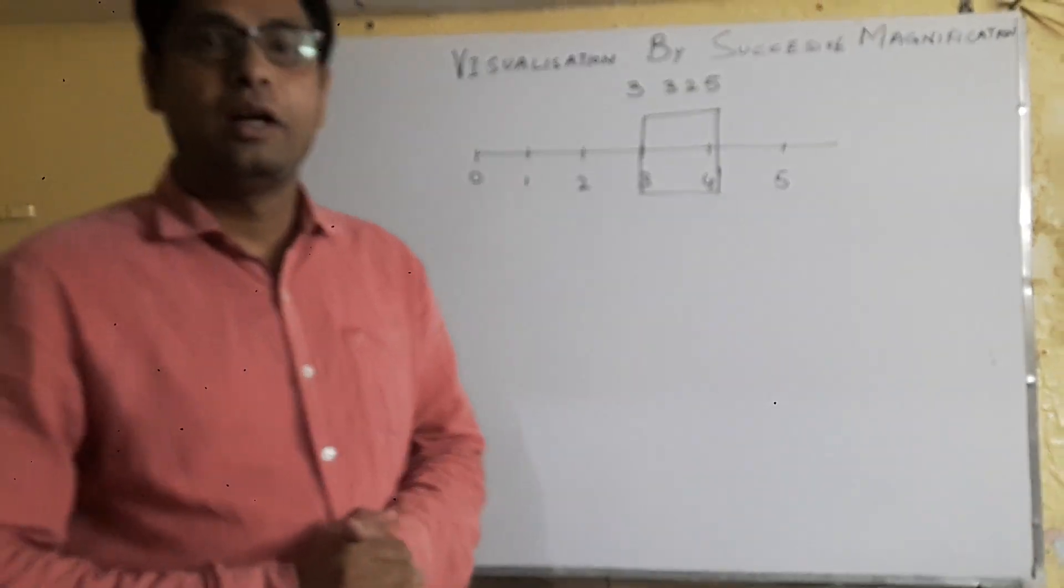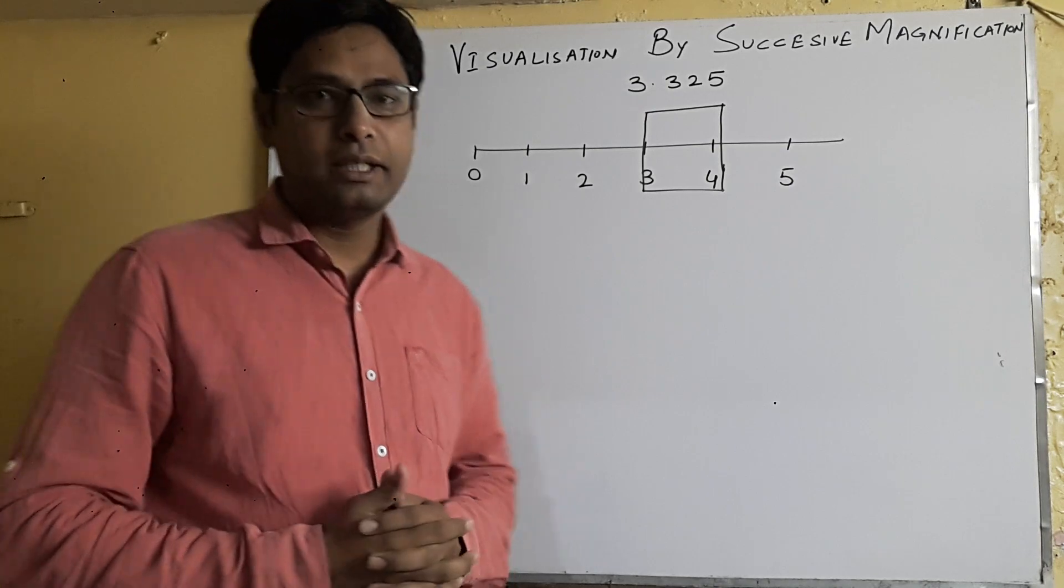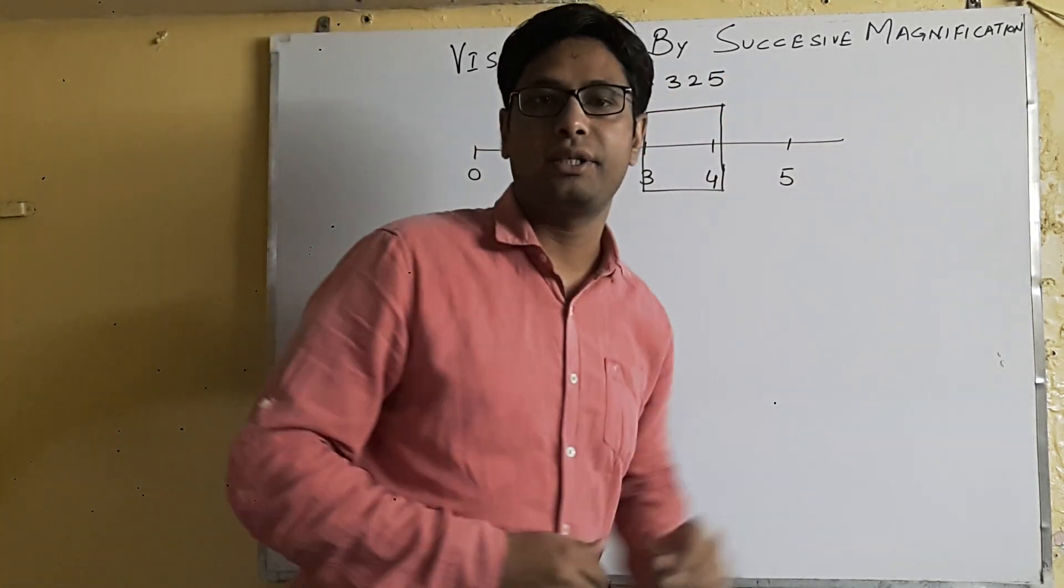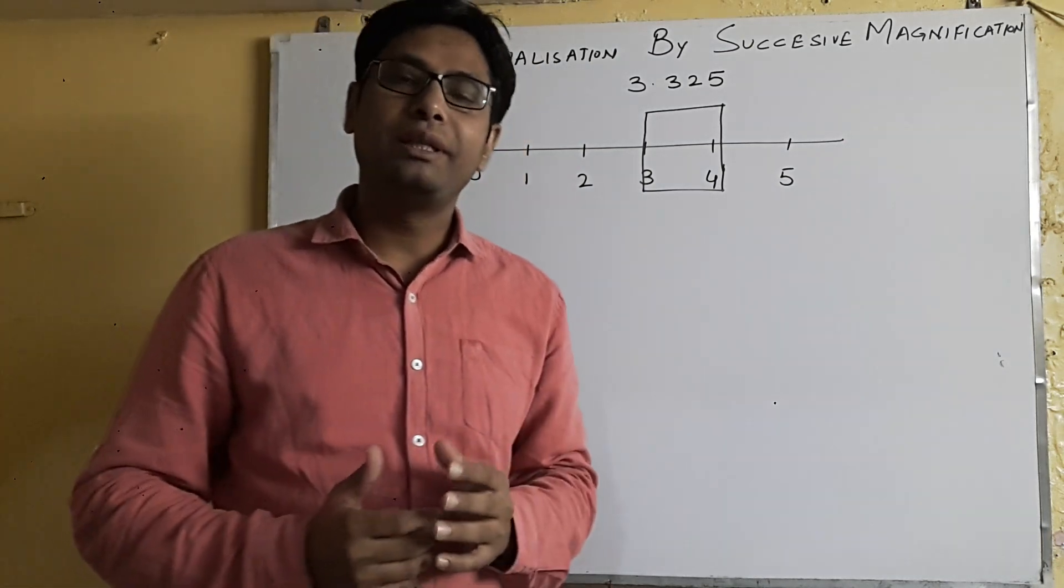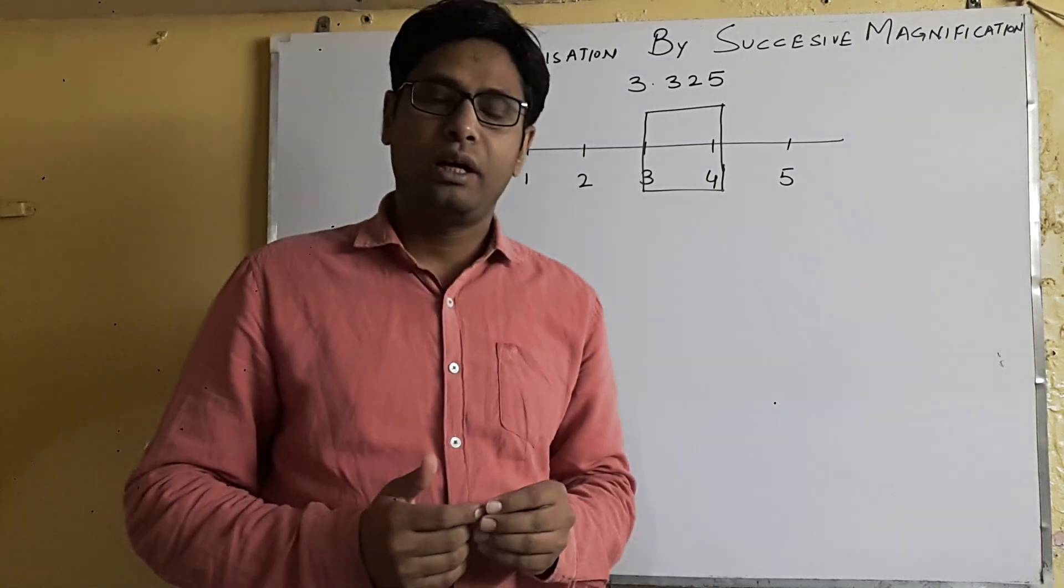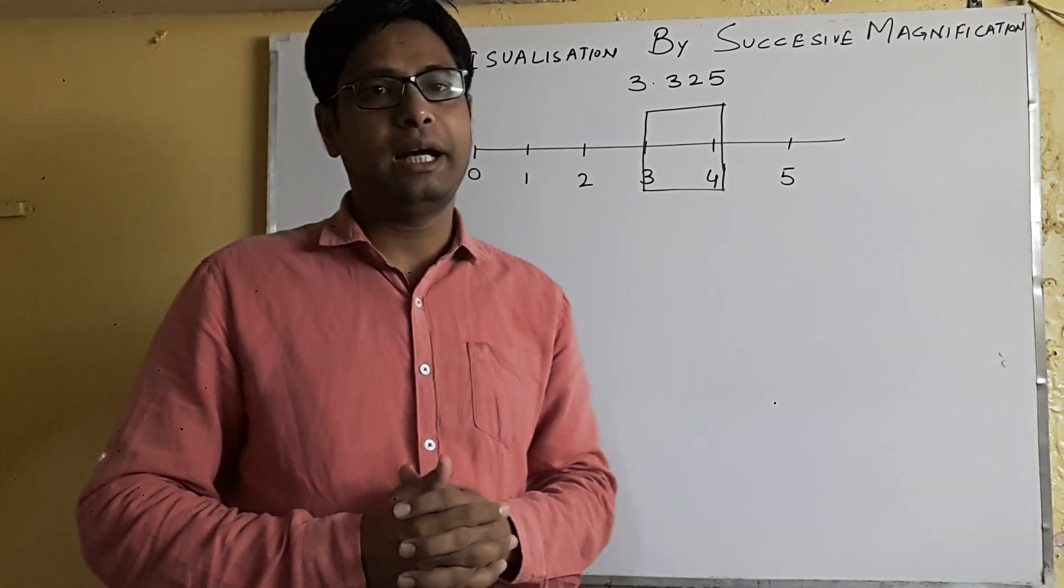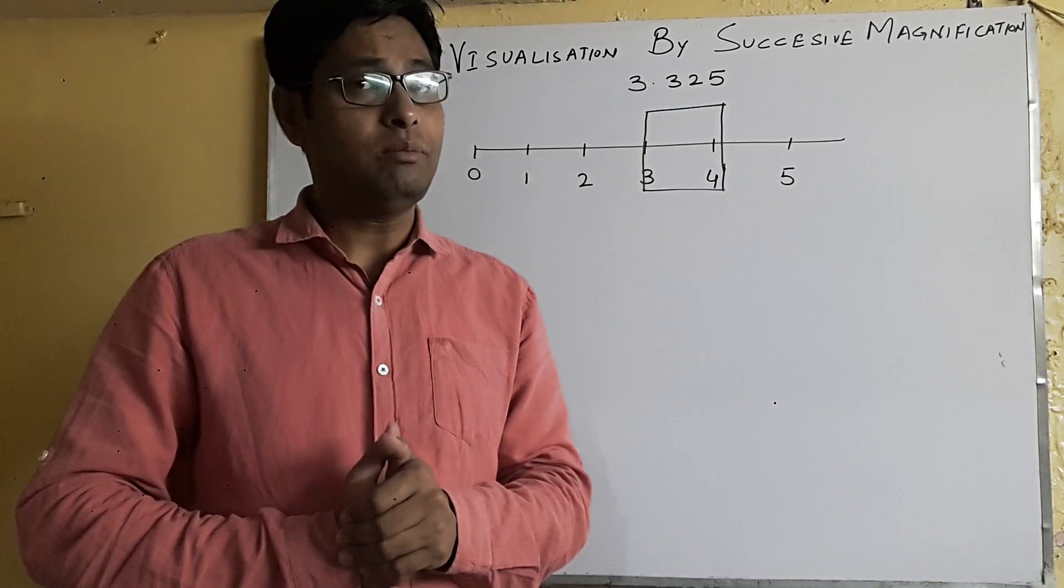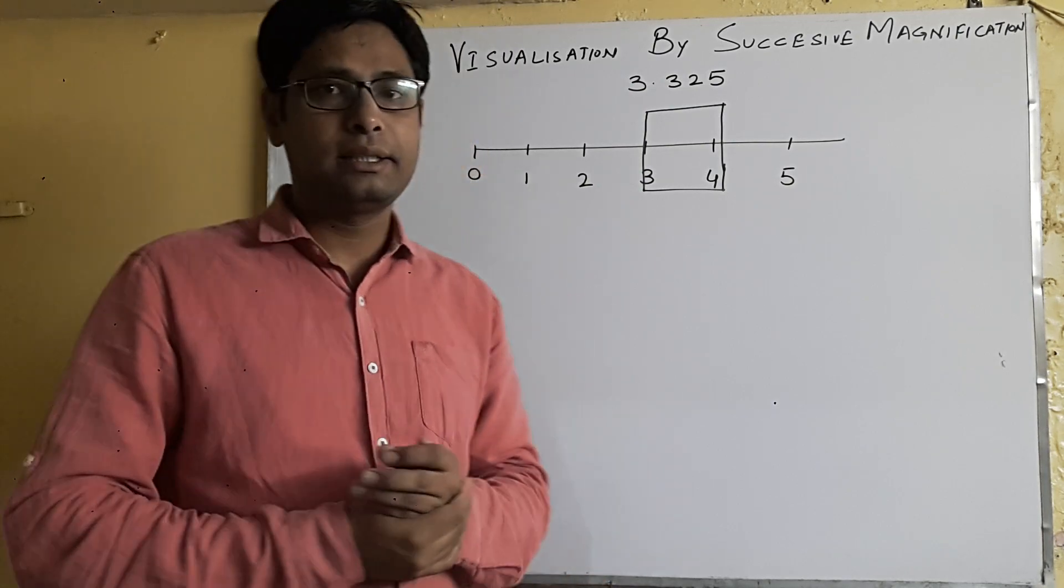Hello students, today we are going to start a new topic: visualization by successive magnification. What does it mean? For example, there is a number 3.325. This number is a rational number. I told you that rational and irrational numbers all are on the number line. Now we are going to locate this number on the number line and find where it lies.